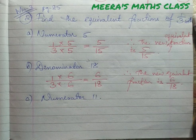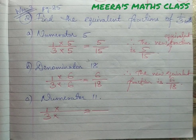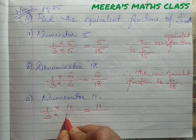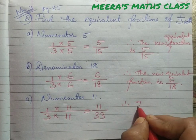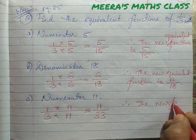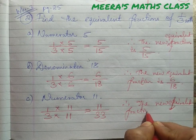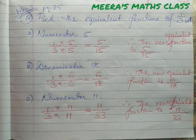Same way, 1 by 3 — multiply by how much to get the numerator as 11? You multiply by 11. Same you multiply in the denominator: 3 times 11 is 33. Therefore, the new equivalent fraction is 11 by 33. This is your answer for number 2. All of you can watch this, pause, and write it in your copy.